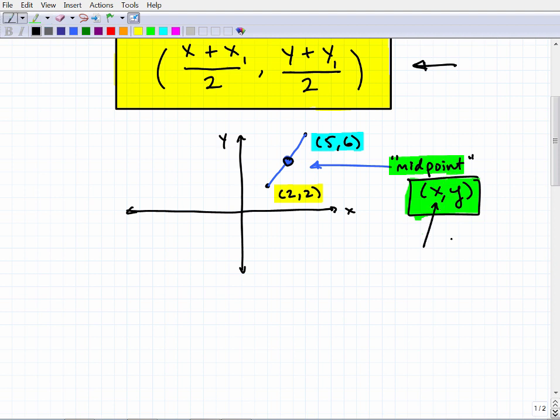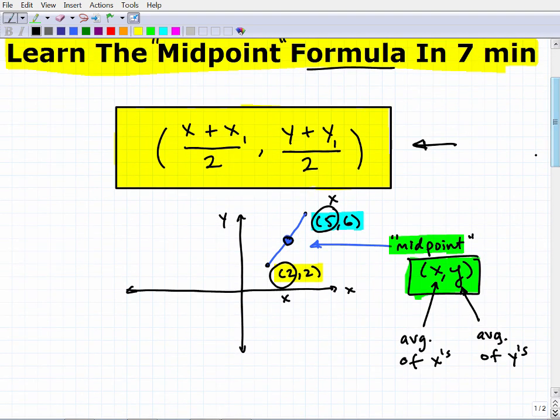So the midpoint will have an X and a Y. Now the X value is going to be the average of the X's. The X's that are involved here. So this two and this five are the X's, right? These are the X's. The first number in order pair are the X's. And the Y value here of the midpoint is going to be the average of the Y's. This is what this formula means.